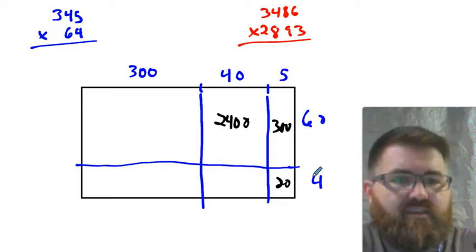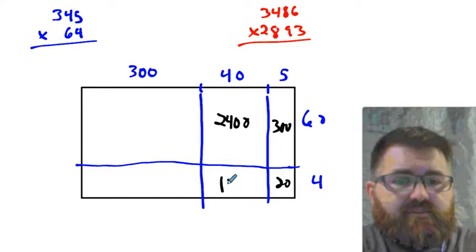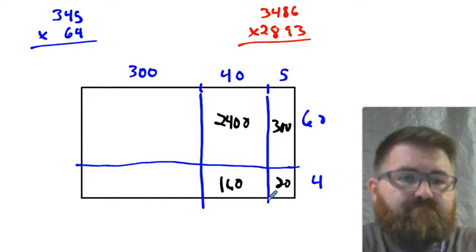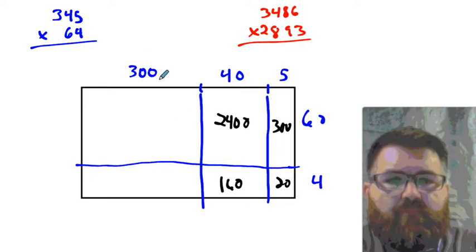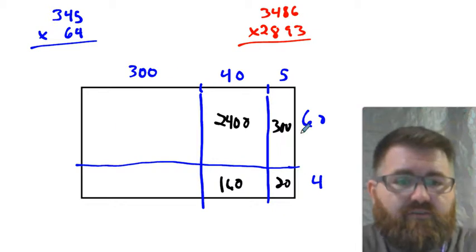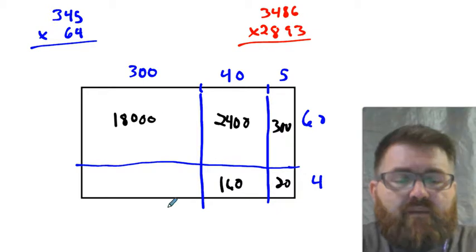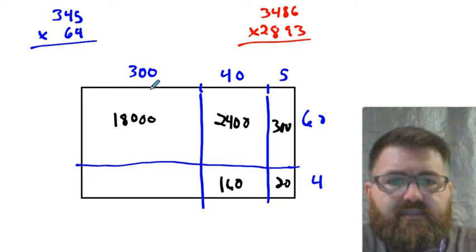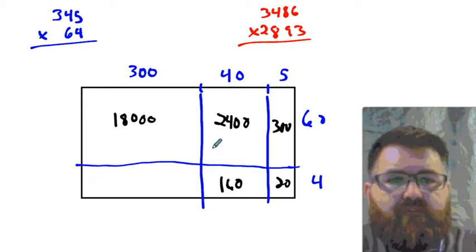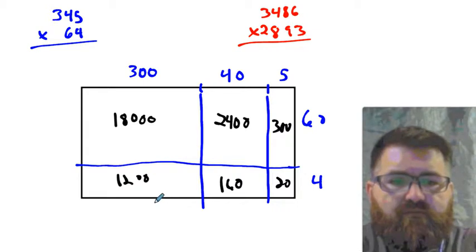That's 2,400. A tens by a 1, that's just going to be tens. So, whatever we find, that's the number of tens. 4 by 4 is 16. That's 16 tens. Hundreds by tens, that's going to be in the thousands. So, 3 by 6 is 18,000. And lastly, here we're going to do 300 by 4. That's hundreds by 1. That's going to be in the hundreds. 3 by 4 is 12. That's 1,200.